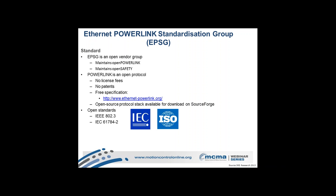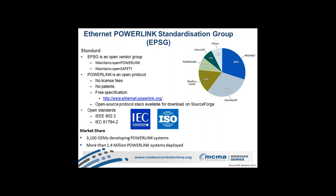Looking at the market today: approximately 30% of the worldwide industrial machine market runs Ethernet IP, another 30% runs Profinet (the Siemens standard), about 17% is still Modbus, about 9% is Powerlink, and about 7% is EtherCAT. Realistically, the 7% and 9% represent the actual hard real-time market, as Ethernet IP and Profinet generally cannot run at rates like 400 microsecond cycle times with very large amounts of data.